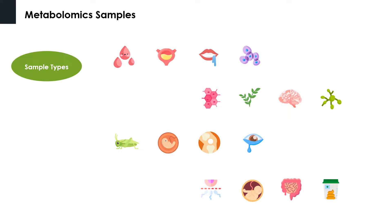So what types of samples are used for metabolomics detection? Metabolomics focuses on small molecule metabolites, molecular weight less than 1500 Daltons, that serve as substrates and products of various metabolic pathways. Usually, samples analyzed in metabolomics are mainly plasma or serum, urine, saliva, cells, as well as animal and plant tissues.